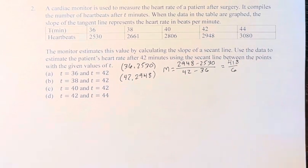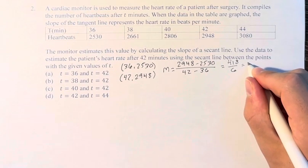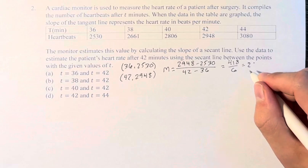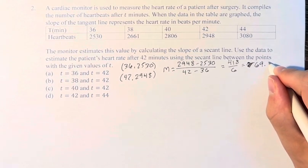And this is equal to— sorry, my calculator messed up— 69 and 2 thirds, so about 69.67.